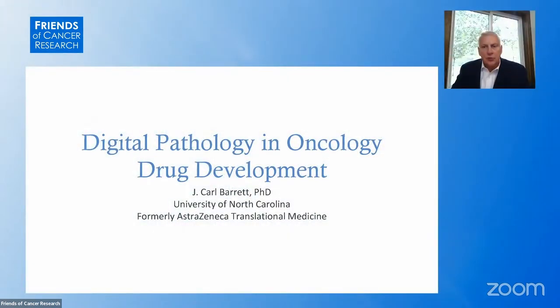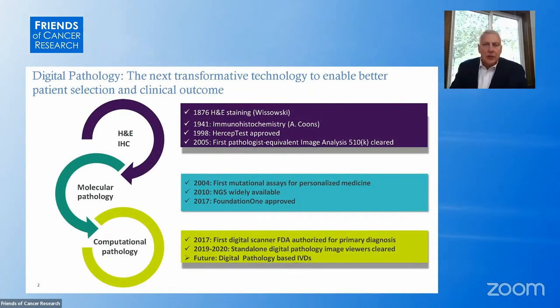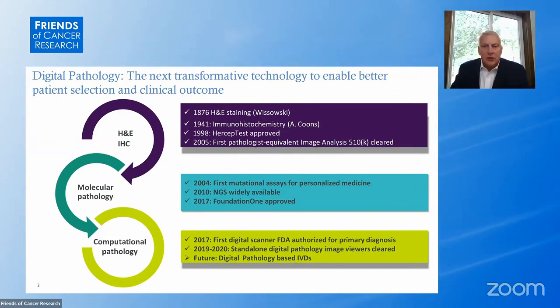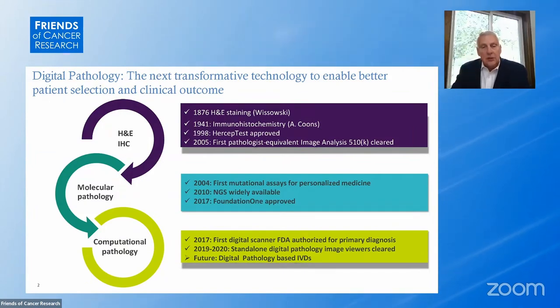I'm Carl Barrett and I'm very pleased today to introduce the Friends of Cancer Research panel on digital pathology and oncology drug development. Let's start by going back in time a little bit about when pathology really got started in 1876 with the development of H&E staining by Wyskowski. This methodology hasn't changed much in the ensuing 125 years. It is used routinely today to diagnose almost every cancer which is tissue-based available.